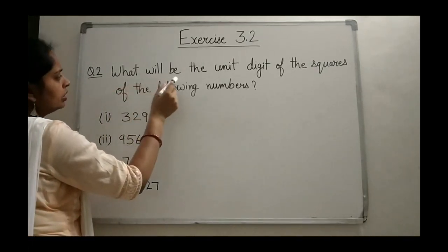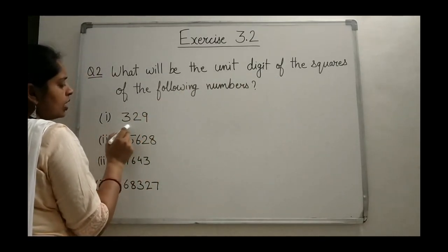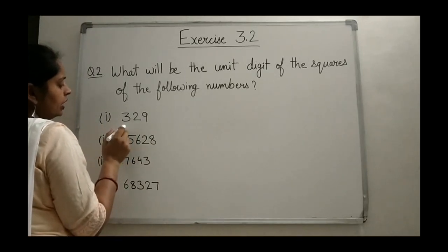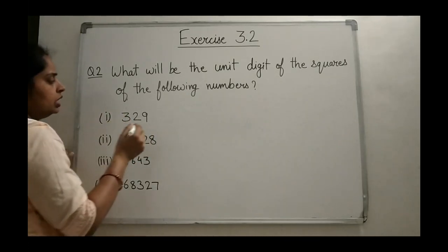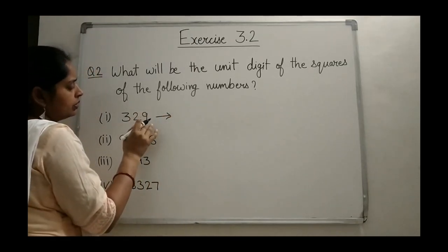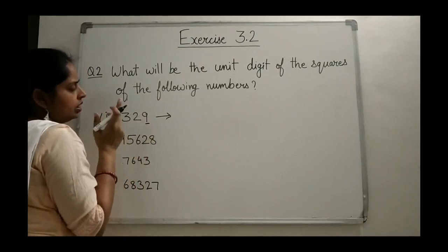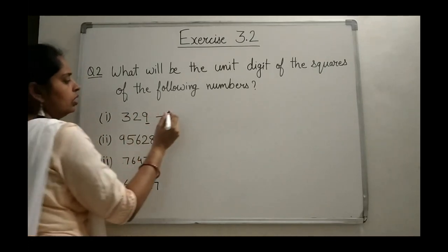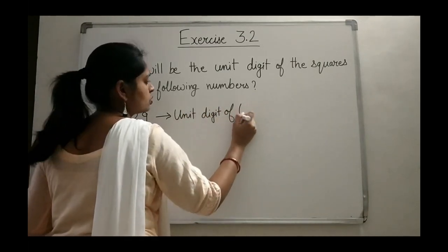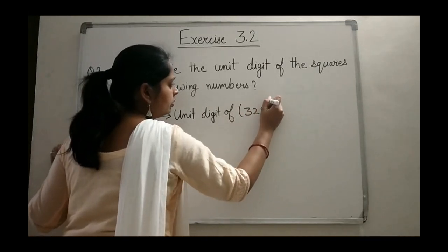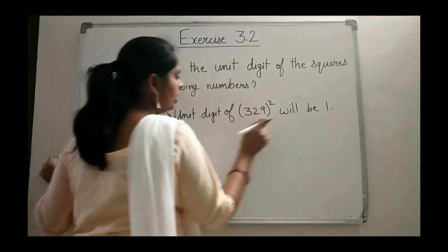Now see the second question: what will be the unit digit of the squares of the following numbers? For 329, you have to find the unit digit of its square. Since 9 is in the unit place, and 9 squared is 81, the unit digit of the square of 329 will be 1.